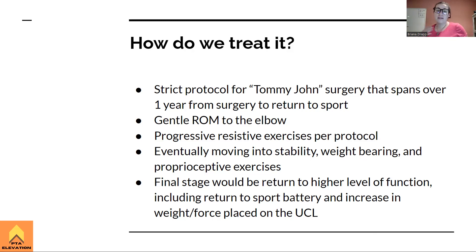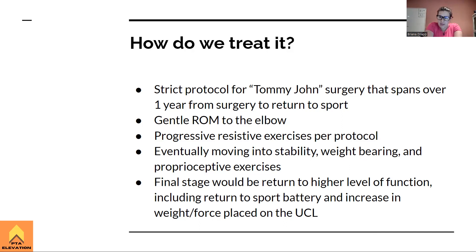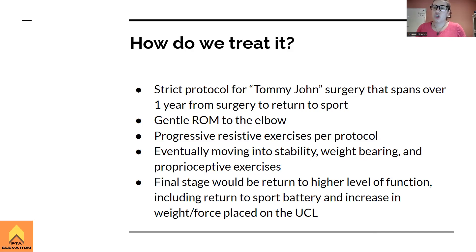As therapists, we start with gentle range of motion to the elbow, progressing into progressive resistive exercises as the protocol allows. Once range of motion is restored and strengthening begins, we move into stability exercises — weight bearing through the shoulders, off the edge of a table, or into a quadruped position — working on proprioception at the elbow to address that gross instability.